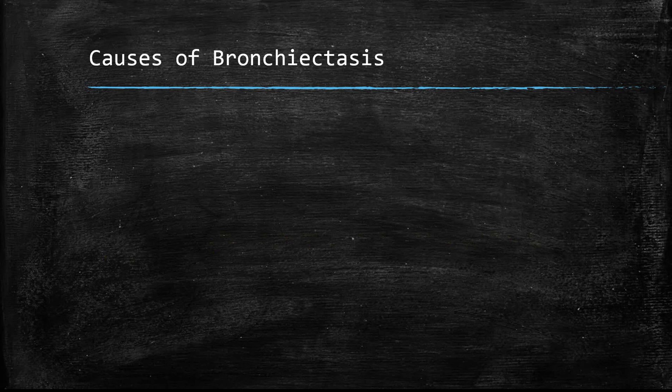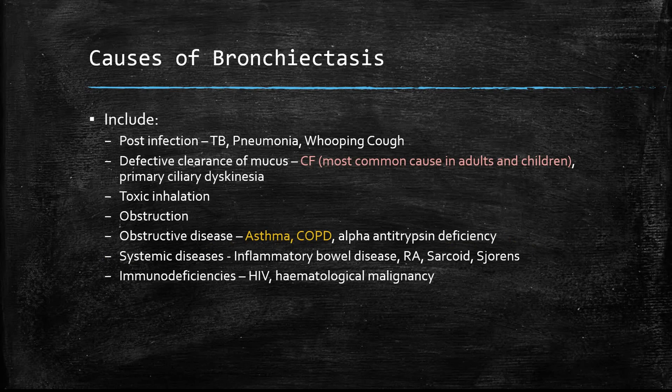As for the specific causes: you can have bronchiectasis due to infection such as TB, pneumonia, and pertussis; defective clearance such as cystic fibrosis — which is the most common cause in both adults and children; toxic inhalation; obstruction; asthma; and COPD. So there are several different causes of bronchiectasis.